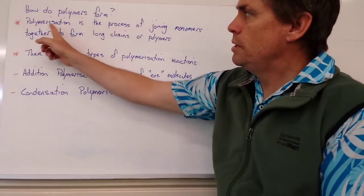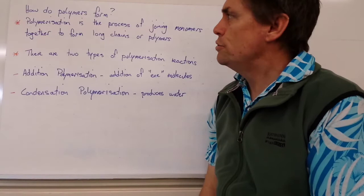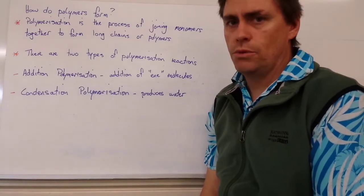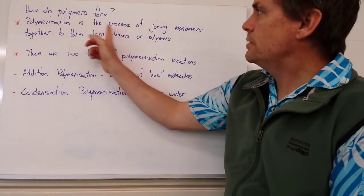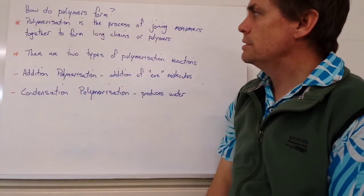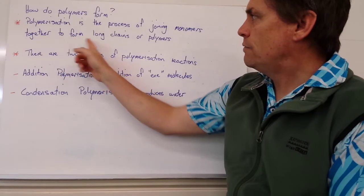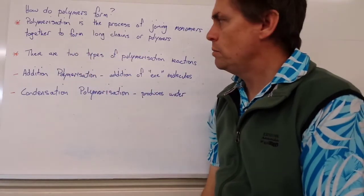And we use the word polymerization to mean how two monomers and ultimately many monomers join together. So polymerization is the process of joining monomers together to form long chains, or what we call polymers.